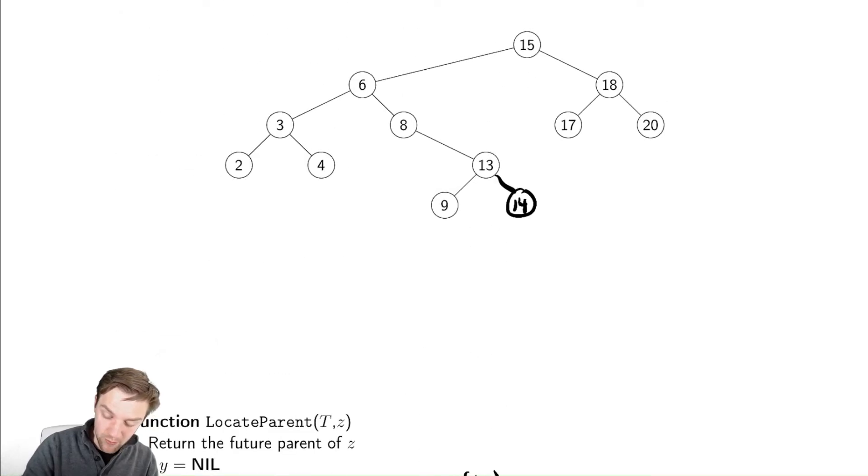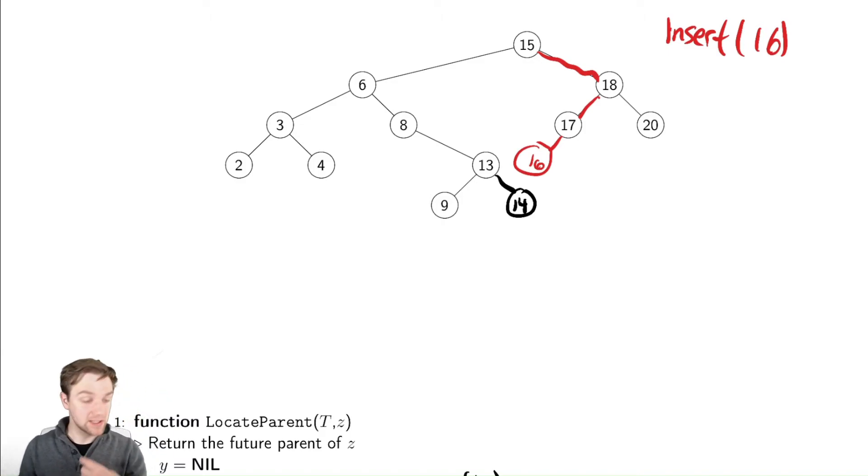Here 14 became y's right child. Let's say I wanted to insert 16. Well 16 I would need to go to the right and then to the left and then over here 16 would go there and 16 was the left child because it was less than 17. So that's just assigning the pointers.